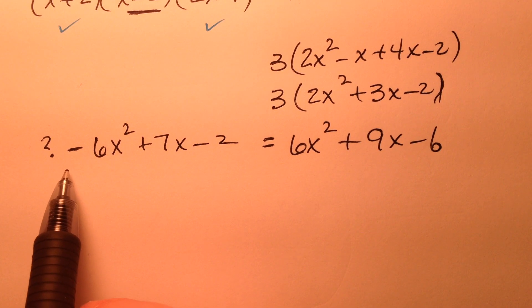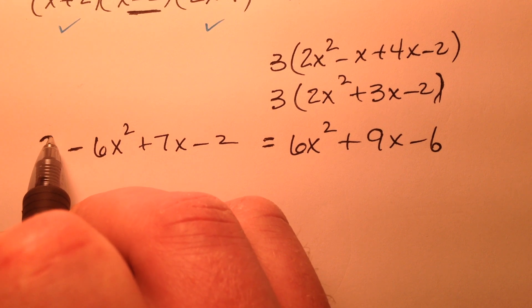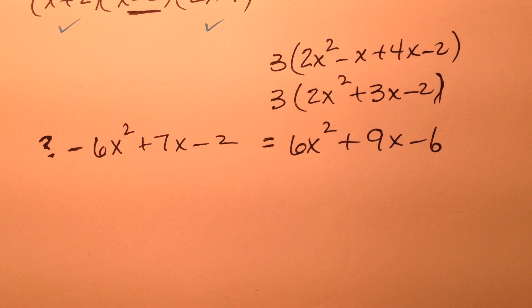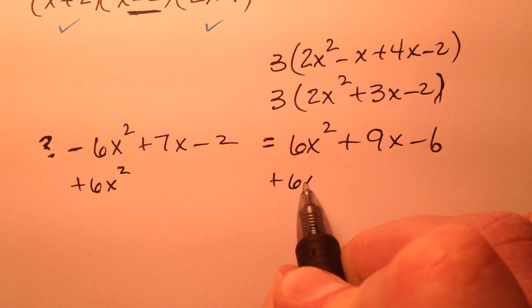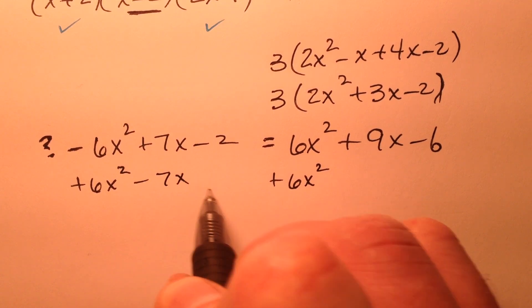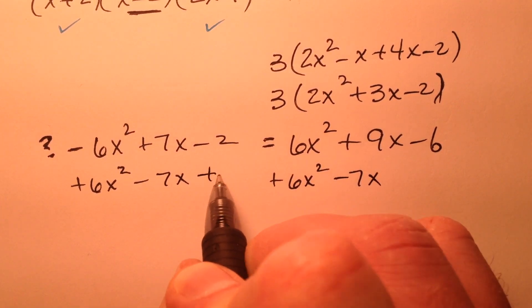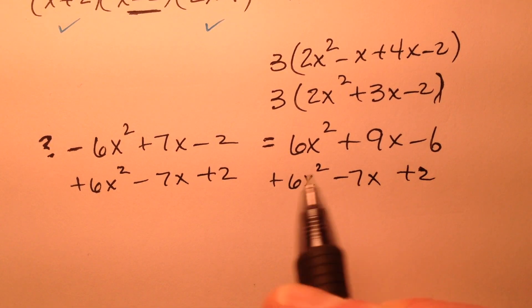So if I go through and solve for this question mark, I'm going to run through and just do my basic properties of equality. So I'm going to add 6x squared to both sides. I'm going to minus 7x from both sides. And I'm going to add 2 to both sides.